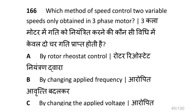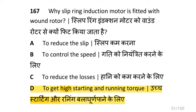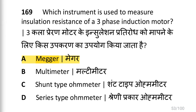The speed control method by which only two variable speeds can be obtained in a three phase motor is by changing the number of stator poles. A slip ring induction motor is fitted with a wound rotor to get high starting torque and running torque. The function of the timer in an automatic star delta starter is to change from star to delta.